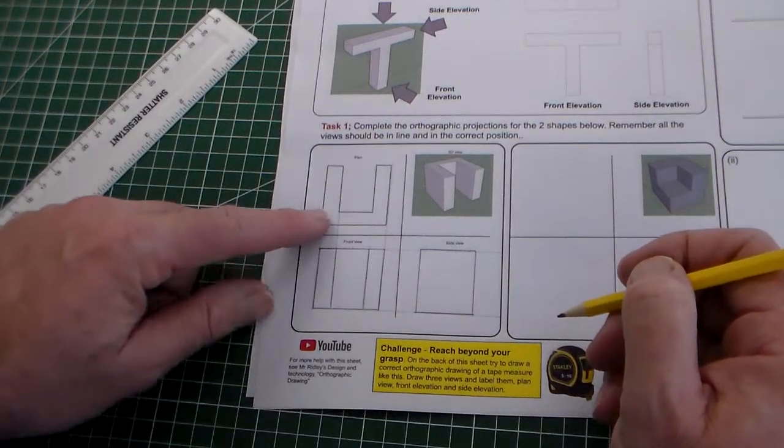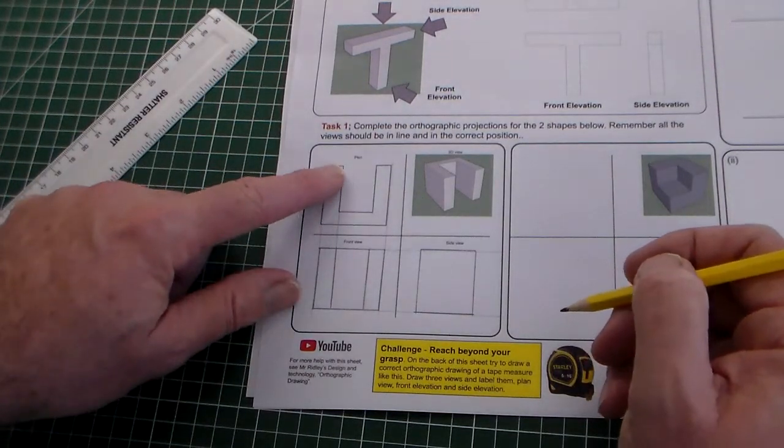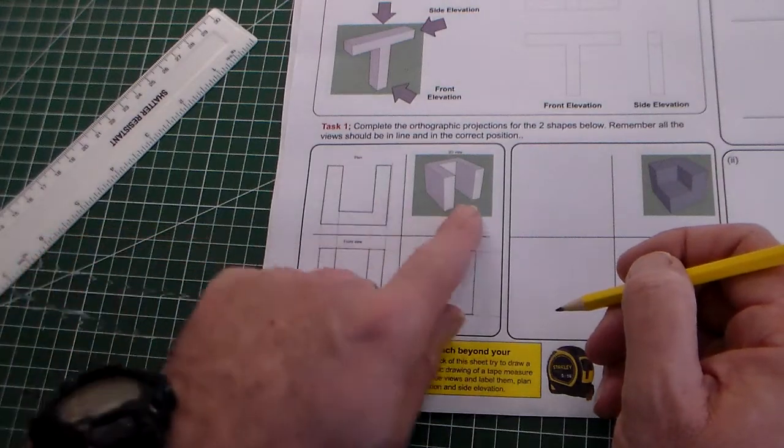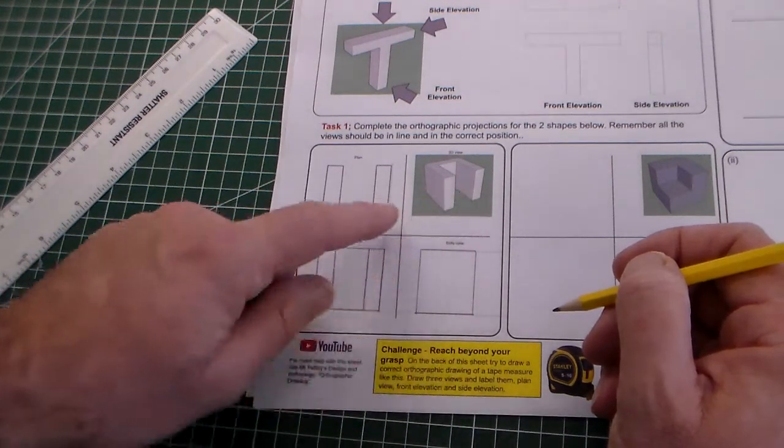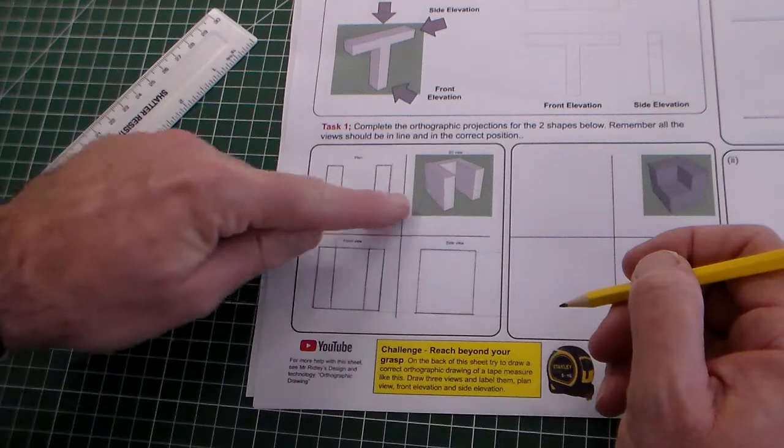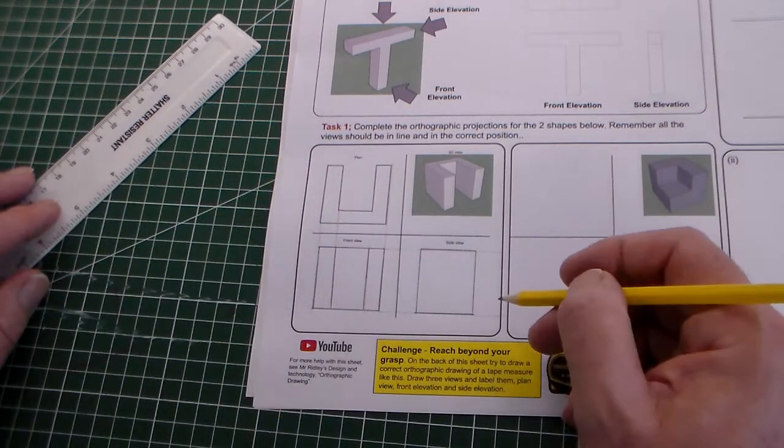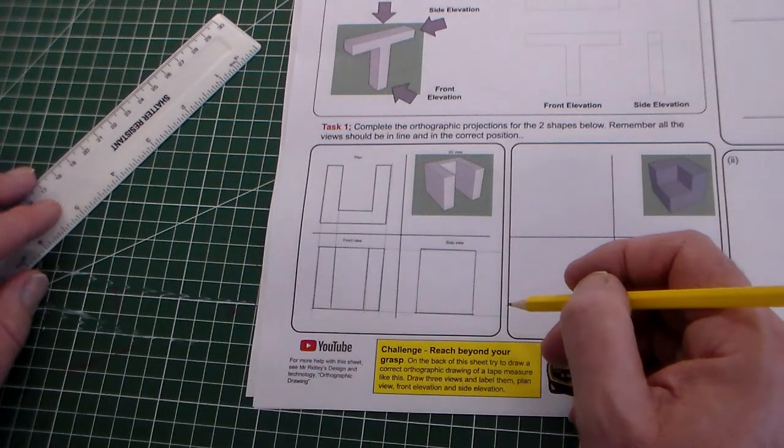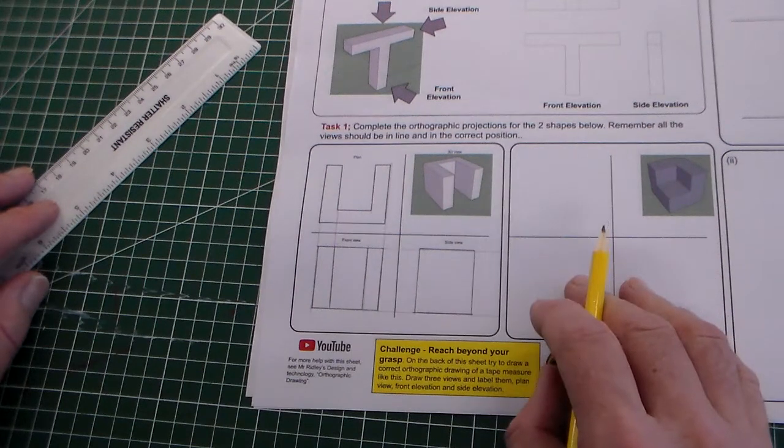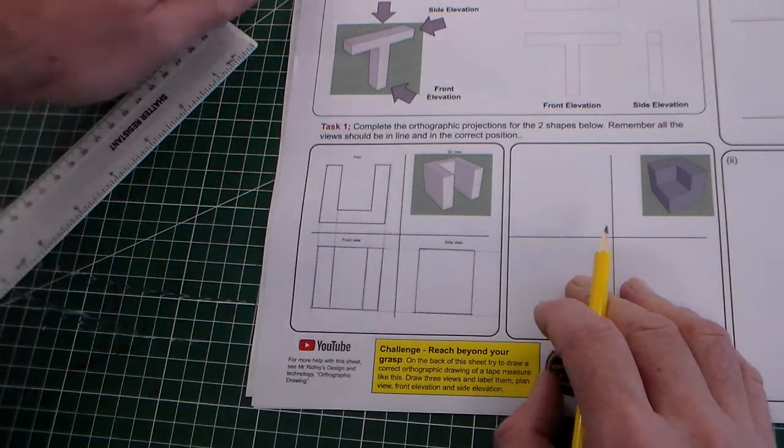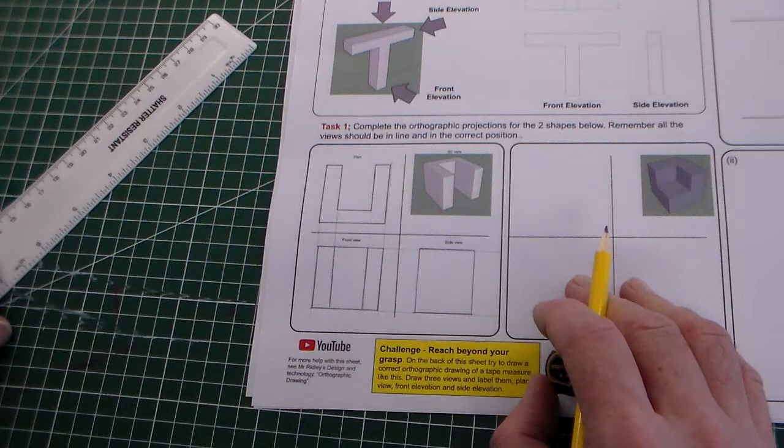So we can see there now, from this plan view, I've created a front view that's looking at that, that face there, and a side view looking at that face. So that is task one for the orthographic drawing introduction.